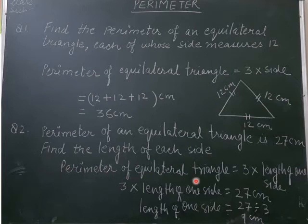Perimeter of equilateral triangle is equal to, we know, 3 into length of one side. 3 into length of one side is equal to 27 cm. This is the perimeter of equilateral triangle. It is given in the question.